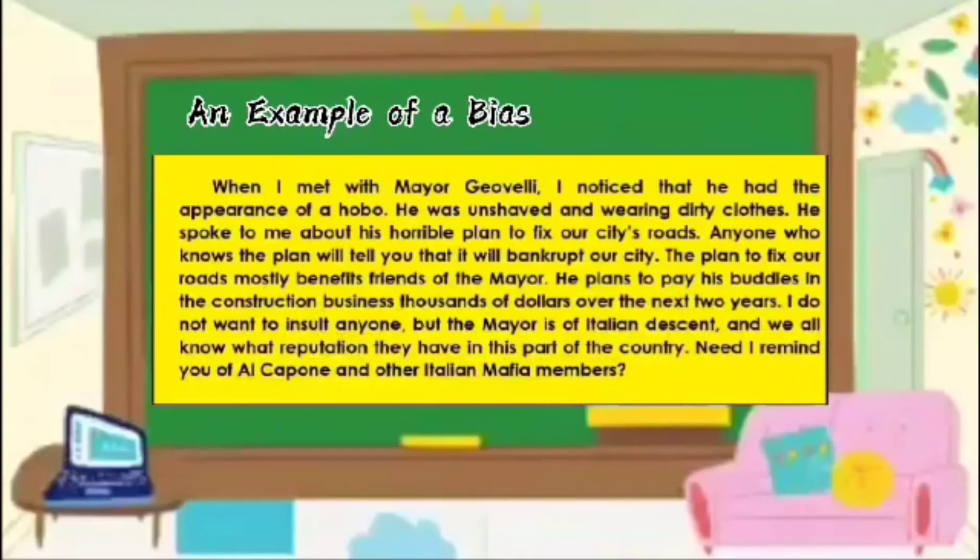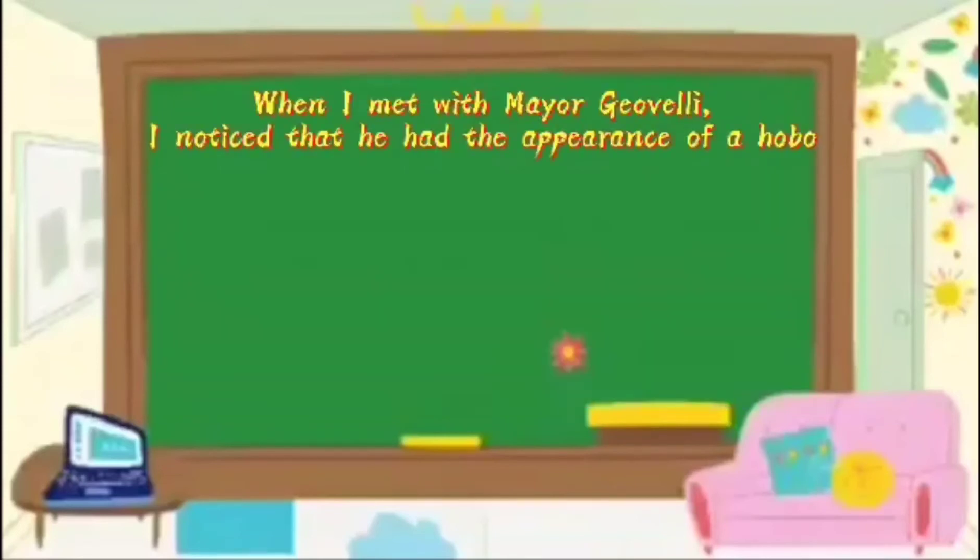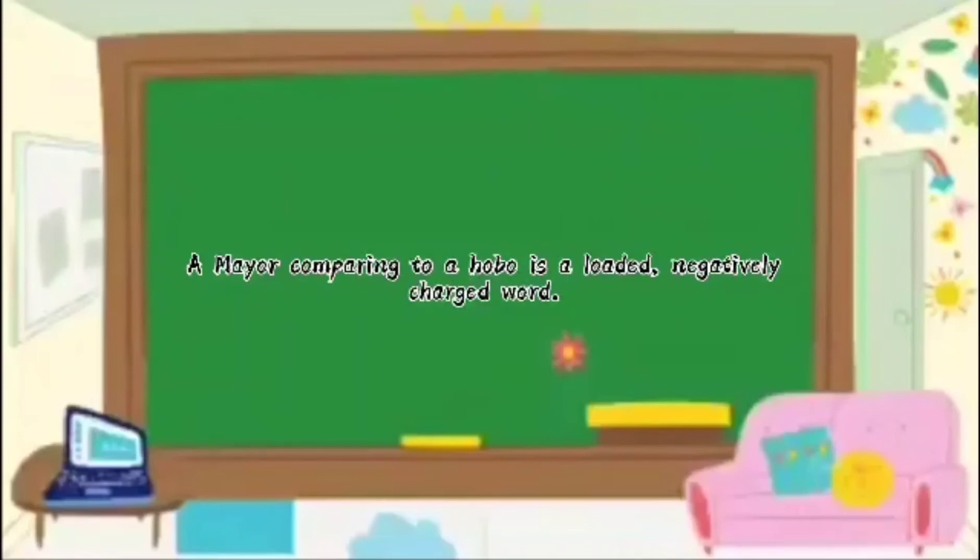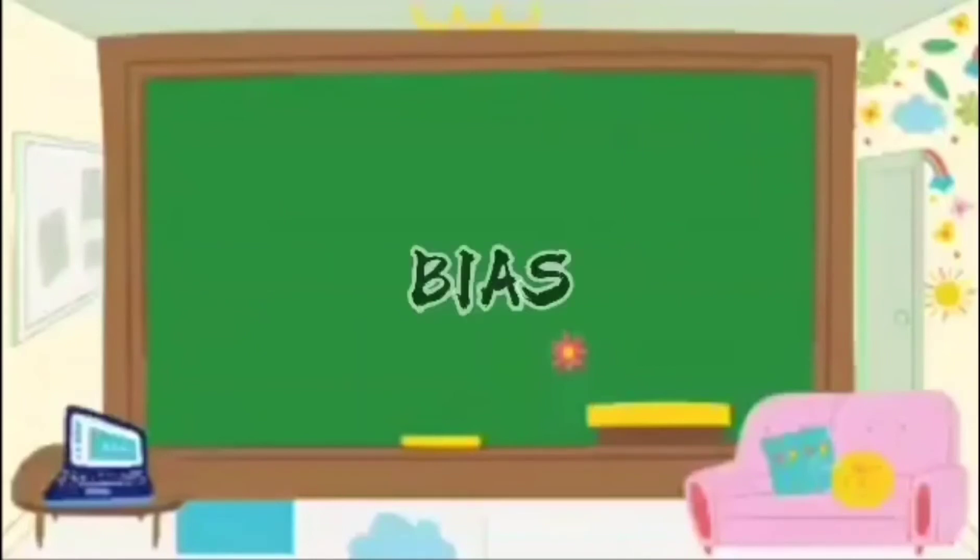Did I remind you of Al Capone and other Italian mafia members? So first is when I met with Mayor Juvelli, I noticed that he had the appearance of a hobo. So hobo means a person that has no place to live, no money, and travels different places. So it looks like this. So imagine comparing a mayor to a hobo. It's a loaded, negatively charged word. So it's biased.